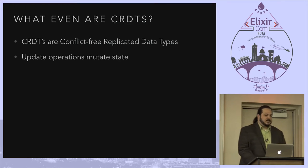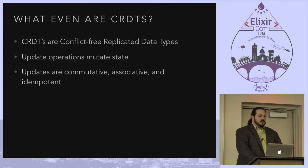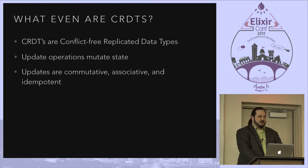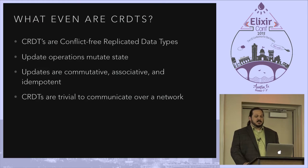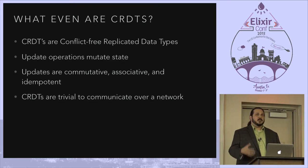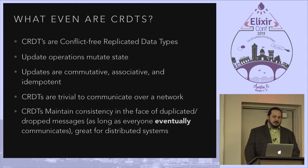In general you issue an update operation to mutate the state of a CRDT. Updates are defined as being commutative, associative, and idempotent — there are exceptions but generally people don't like to talk about them. CRDTs are trivial to communicate over a network. You can always repeat a message, send it five times, send stuff from the past, send stuff out of order. As long as the latest messages are communicated you will arrive at a consistent state, and as long as you have reasonably recent updates all the answers from all your different servers will be close. So they're very great for distributed systems.